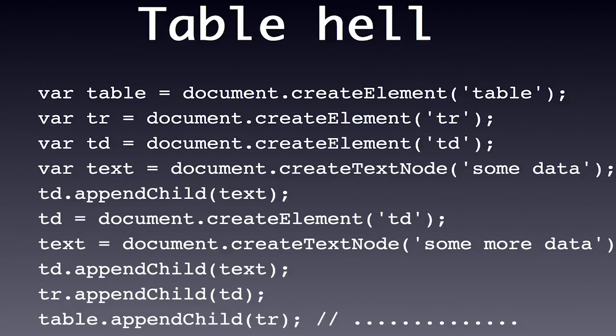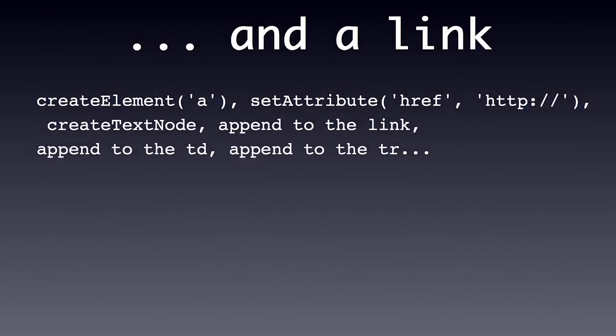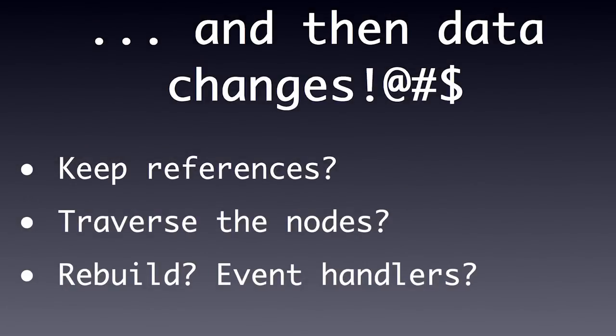Remember the last time you had a bunch of data and had to create a table? You'd write: create element table, create a row, create a cell — I've even omitted the tbody — but you need a row, a cell, put some data in there, append this, append that, create another element, append, append, append, and then finally you've built it. Then data changes — oh man. Do you keep references to all those objects you created? Probably not. Do you traverse the nodes hunting for the stuff that changed so you can update it?